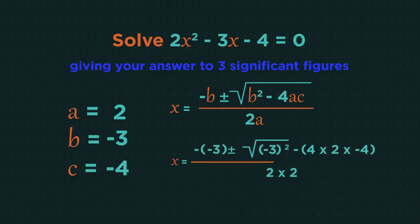Minus minus 3 plus or minus the square root of negative 3 squared minus 4 multiplied by 2 multiplied by negative 4. All of that divided by 2 multiplied by 2. Be very careful with the negatives. Use brackets to prevent mistakes.